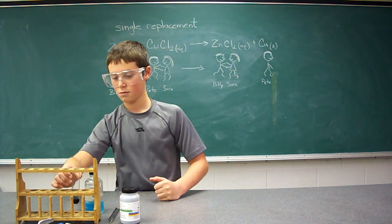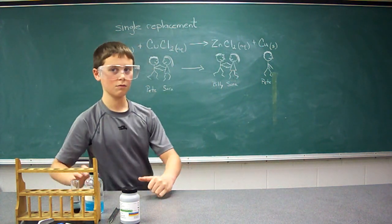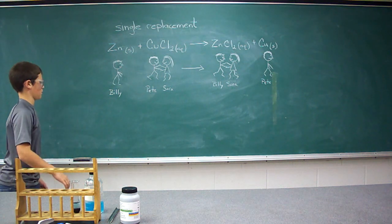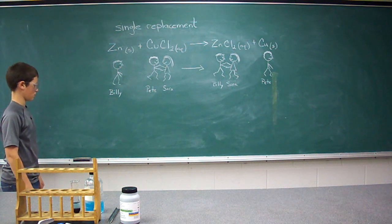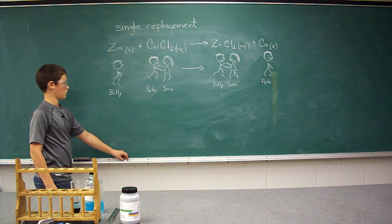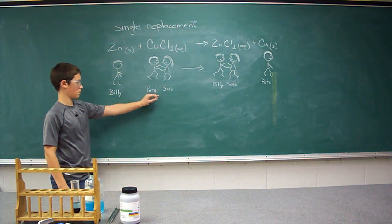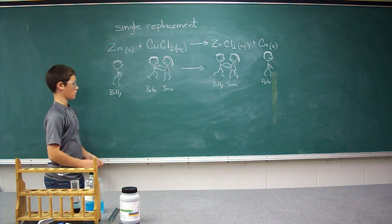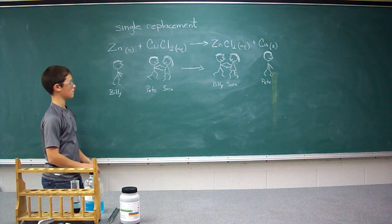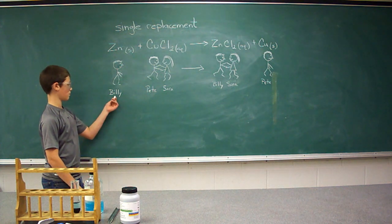One way to look at this type of reaction is to imagine we have some people dancing on the dance floor. Pete and Sarah are initially dancing with each other — Pete would be the copper, Sarah is the chlorine, and Billy is the zinc by himself.